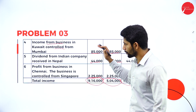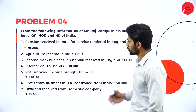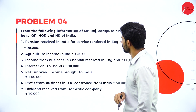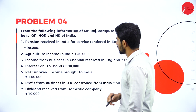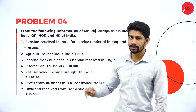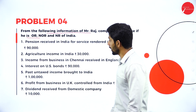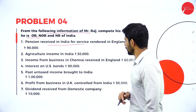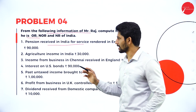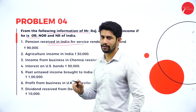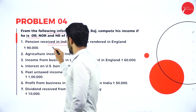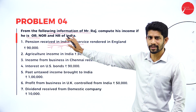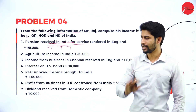Now we move on to Problem number 4. From the following information of Mr. Raj, compute his income if he is ordinary resident, not ordinary resident, or non-resident of India. First: pension received in India — we have the word 'received in India,' so treatment is taxable, taxable, taxable. We will not look into anything else; if it is received in India — taxable, taxable, taxable.